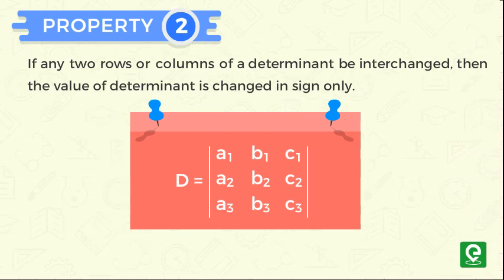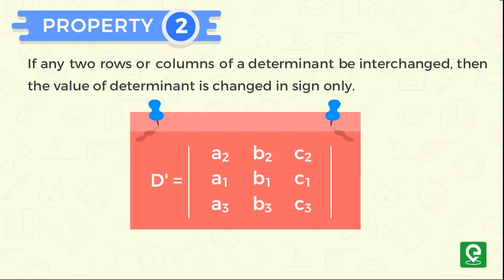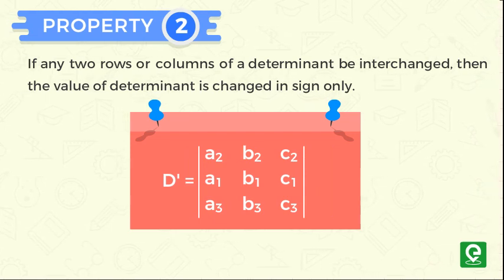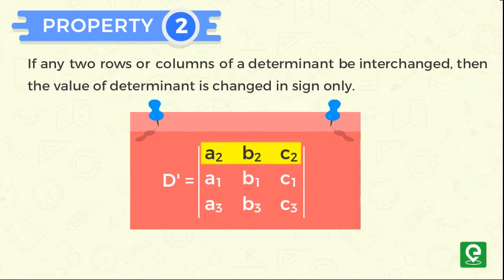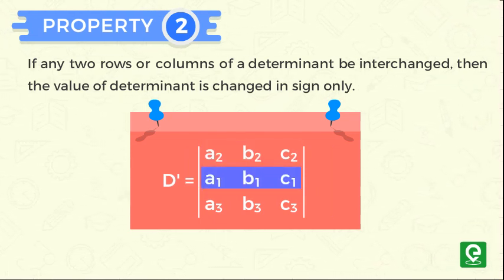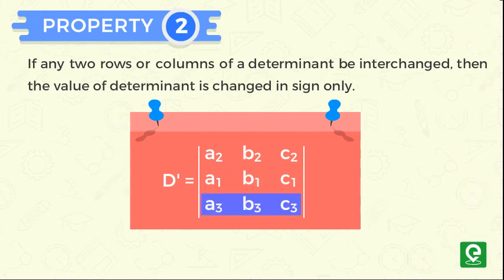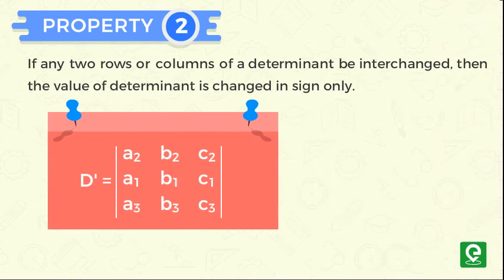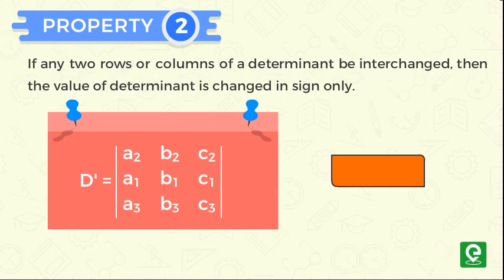After changing two rows, the determinant D dash we get is a2, b2, c2, a1, b1, c1, a3, b3, c3. According to Property 2, determinant D dash is equal to minus of determinant D.